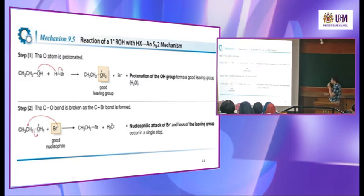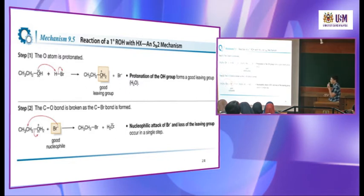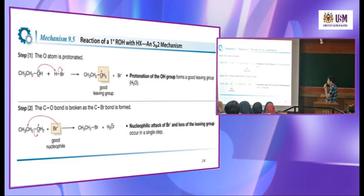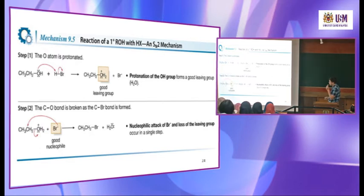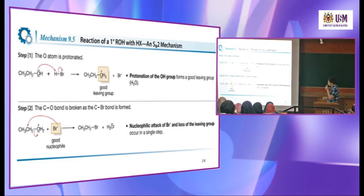The reaction of a primary alcohol with HX follows an SN2 mechanism — nucleophilic substitution involving two molecules. The first step: OH reacts with HBr, the oxygen attacks the H forming water. This is a standard step. Then bromide produced acts as a nucleophile, attacks the slightly positive carbon, water leaves as the leaving group, and you get the alkyl bromide product. It's called SN2 because it involves two species.